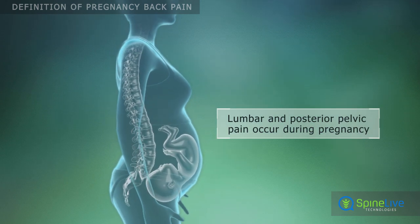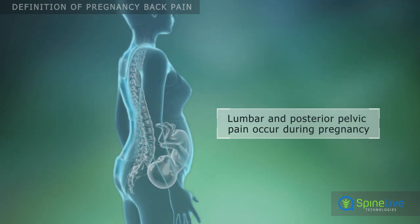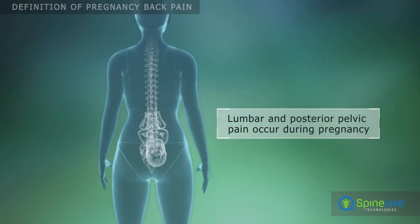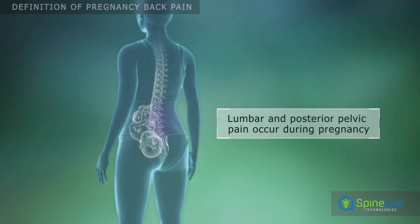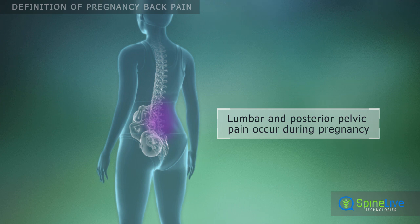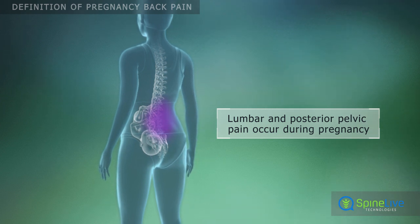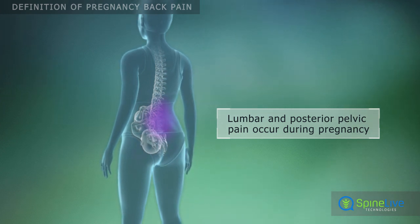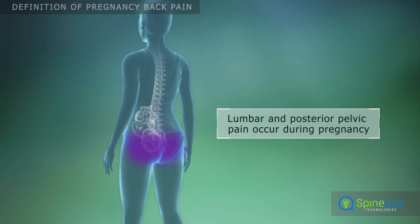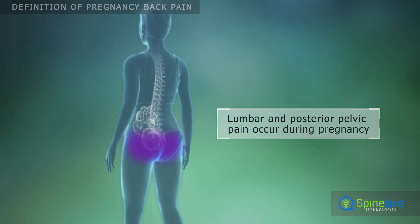There are two types of back pain during pregnancy. The first type is called lumbar pain and is located in the center of the low back. The second type is called posterior pelvic pain, which is located lower than lumbar pain.